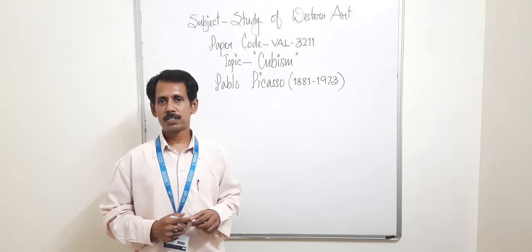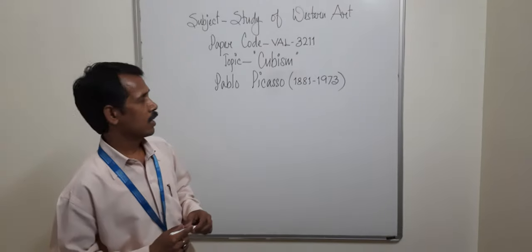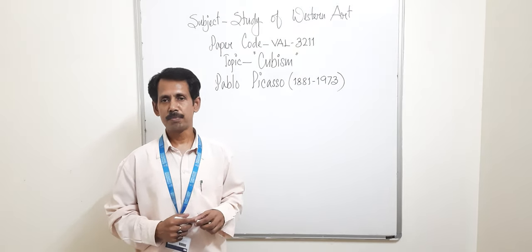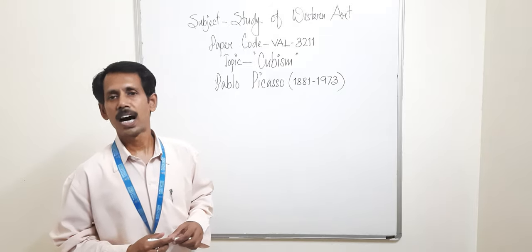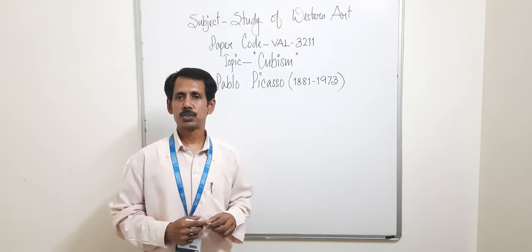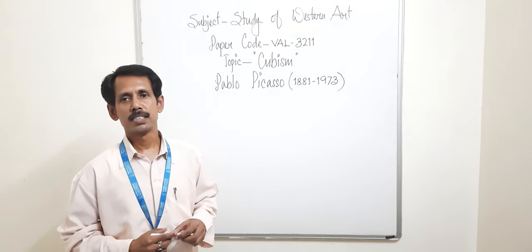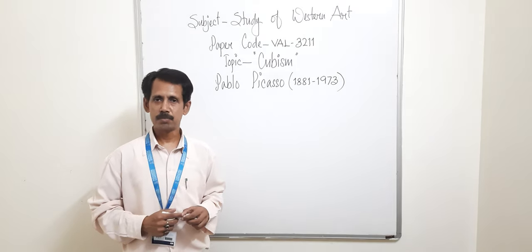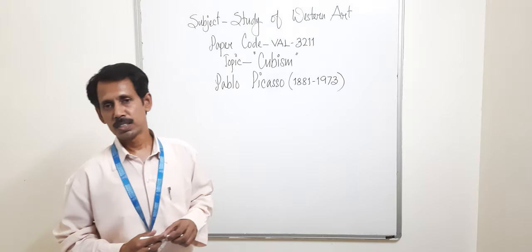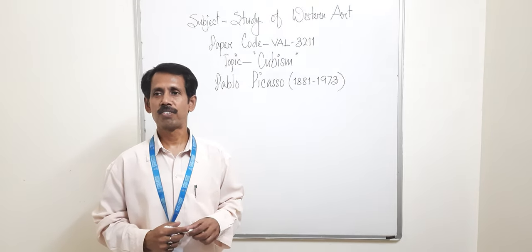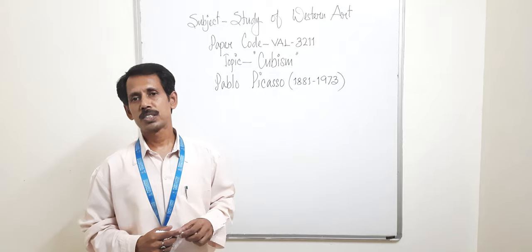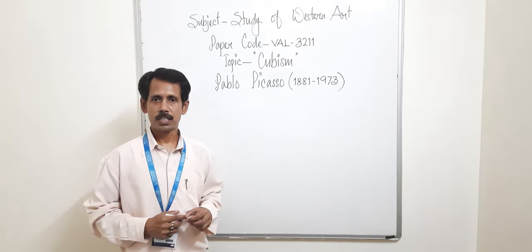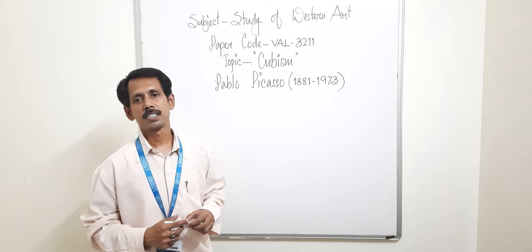So today I will talk about just Cubism and it was very famous during that time and it was an art movement. Cubism was an art movement which started in 20th century and one of the best artists during that time was Pablo Picasso. You can say that he was the father of Cubism but there was another artist whose name was George Braque. They both were associated with Cubism.